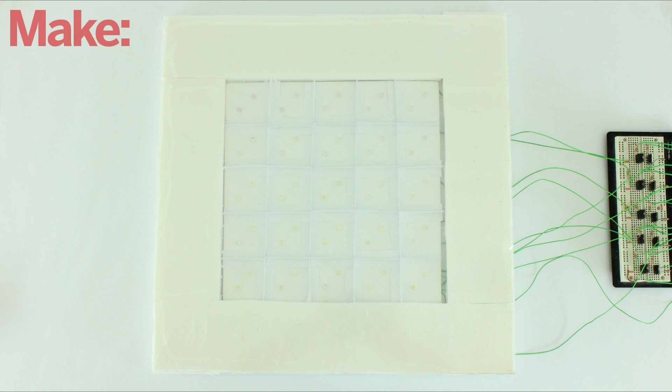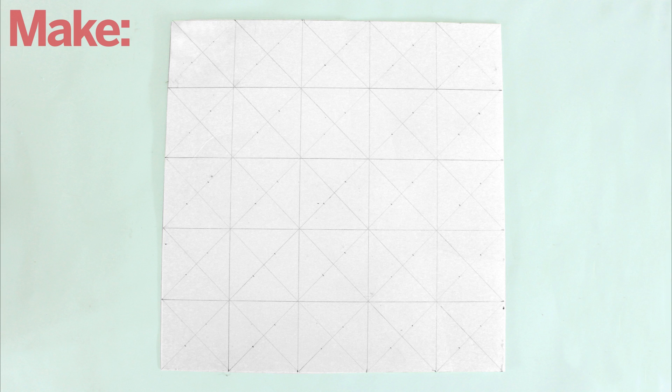The first thing that you need to do is build a large LED matrix. Start by cutting out a 10 inch by 10 inch square of cardstock and dividing it into a grid of two inch squares.